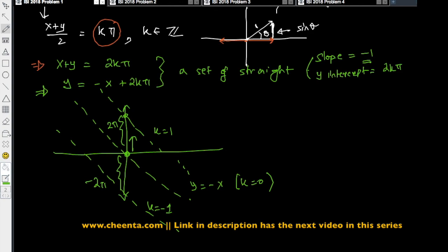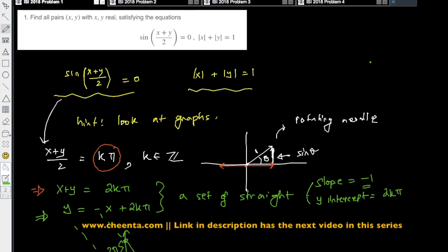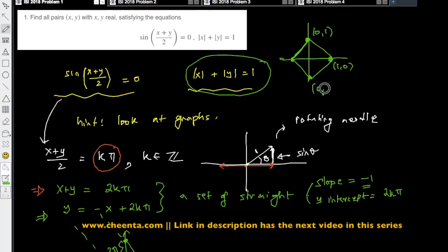That's the picture of sin((x+y)/2) = 0. The next thing that we want is the picture of |x| + |y| = 1. Now this is simply a rhombus like this. And these points are (0,1), (1,0), (0,-1), and (-1,0). So why is the picture of this equation, absolute value of x plus absolute value of y equal to 1, looks like this?